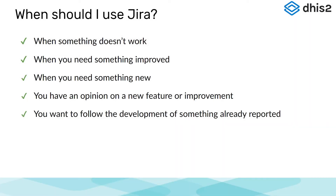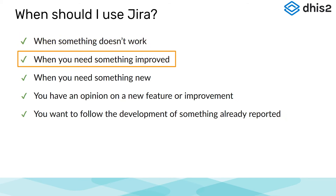JIRA can be used in a number of scenarios. This includes when something doesn't work either in Events, Tracker, or any other parts of DHIS2. For example, when you try to save something for your event program and it doesn't work as you expected. You could also use it when you need something that already exists to be improved — for example, you could request to filter out all of your data elements that belong to a data element group in maintenance.